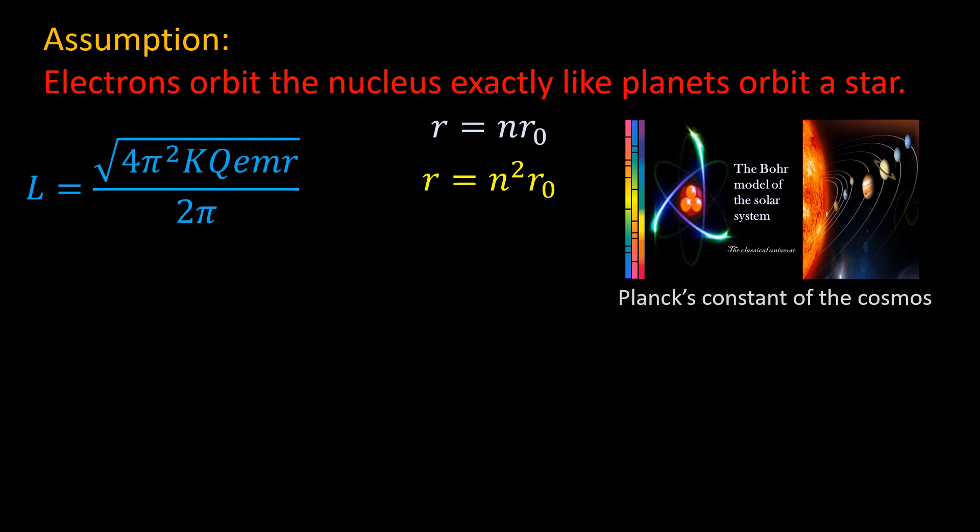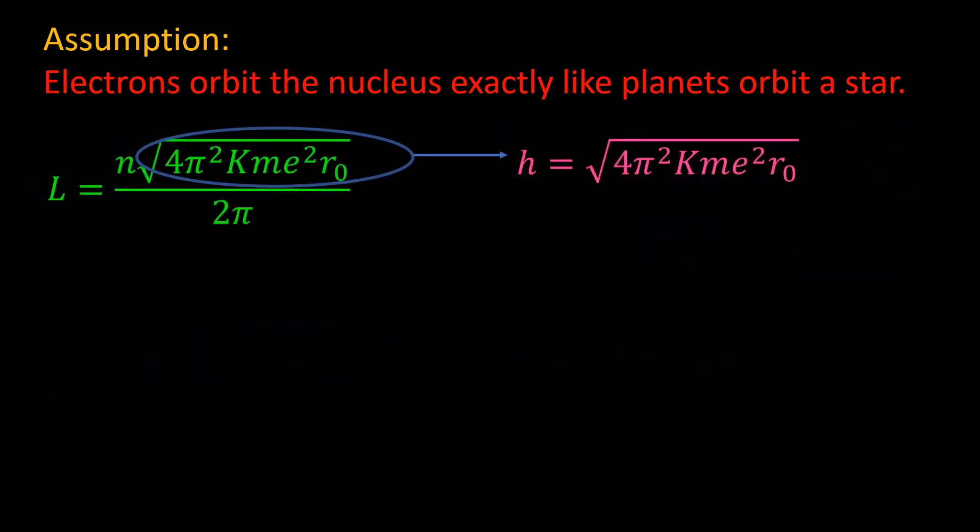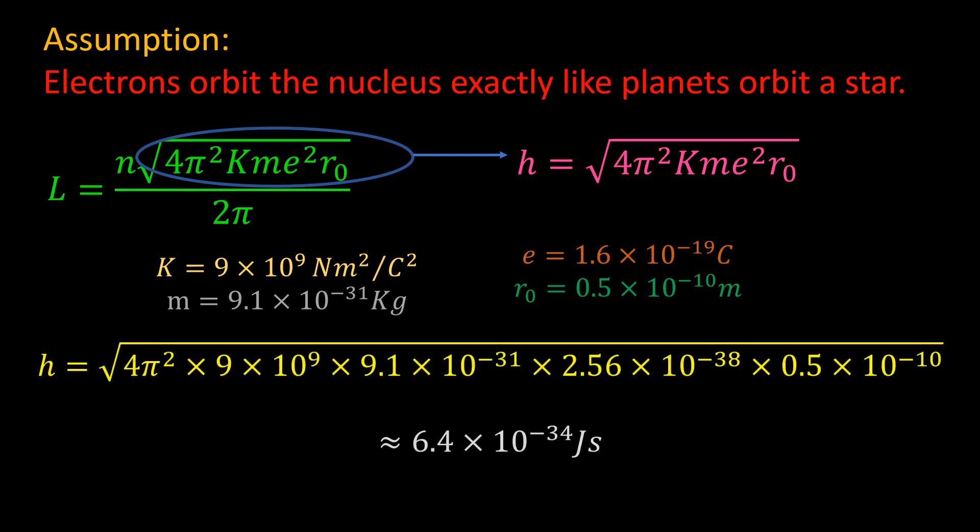Also, for a hydrogen atom, Q is equal to E. That is, the charge of the nucleus is the same as the charge of the electron, since the hydrogen atom only has one proton. Putting these in the momentum equation yields N times the square root over 2 pi. Let this square root be equal to some constant H, since everything under the square root is a constant.